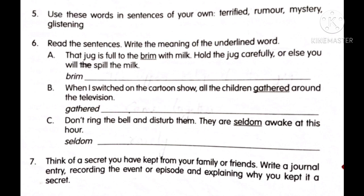For the seventh question, think of a secret you have kept from your family or friends and write a journal entry recording the event or episode, explaining why you kept it a secret. Write a journal entry with four paragraphs, as discussed previously in Blocks 3 and 4. You can read the journal entry about Sunita's father on page number 26 and use it as a model — giving details of the introduction, about the particular person, how they are related to you, and your relationship with them.